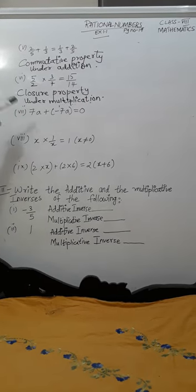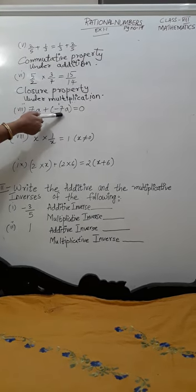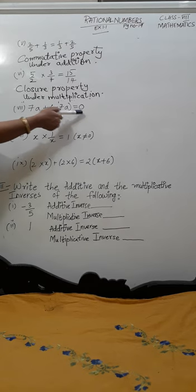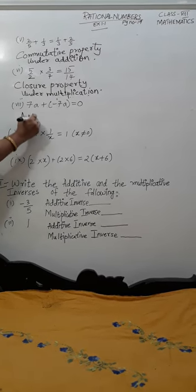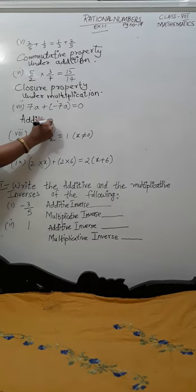Next, 7a plus minus 7a is equal to 0. Which property? Additive inverse.